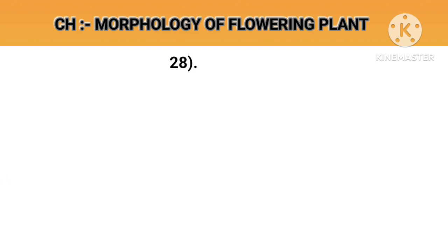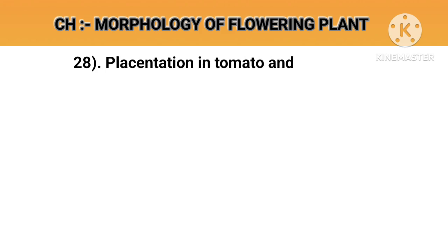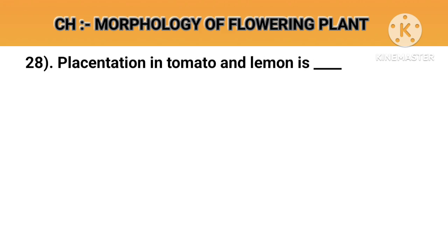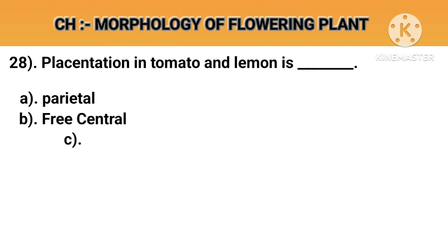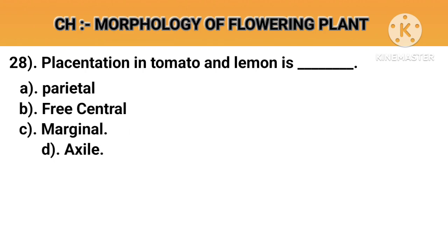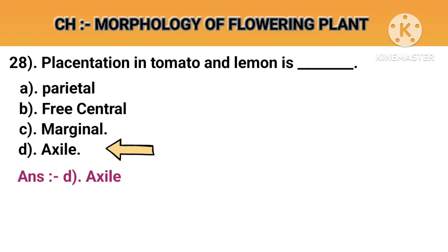Question number 28. Placentation in tomato and lemon is. Option A: Parietal. Option B: Free central. Option C: Marginal. Option D: Axile. Answer D: Axile.